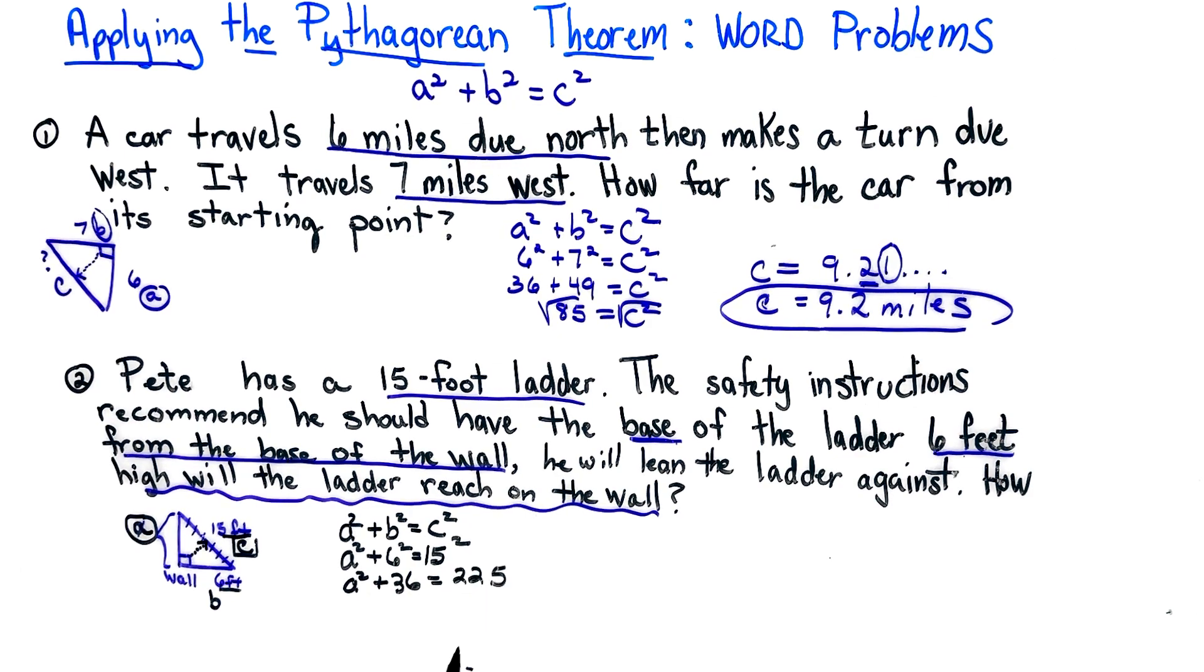As we're working this problem, we need to first multiply. Six squared we know is 36. 15 squared, 15 times 15, is 225. In order to solve this we must get the a alone, so I am going to subtract 36 from both sides and I get that a squared equals 189. At this point you can take the square roots of both sides.